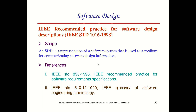The references for this particular standard: IEEE standard 1016 was released in 1998. It refers to IEEE standard 830, released in 1998, which specifies the requirement specifications, and IEEE standard 610.12, released in 1990, for software engineering terminologies. These are the two references used for developing this standard.